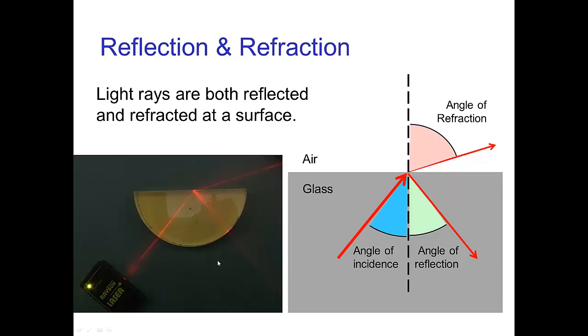In this photo, a laser beam hits the surface and some light is reflected back down while some passes through and is refracted. The angle of reflection equals the angle of incidence, and the angle of refraction depends on the optical properties, the index of refraction of the two materials.